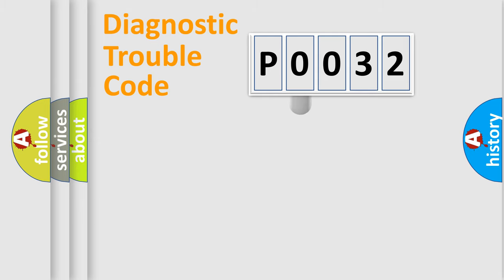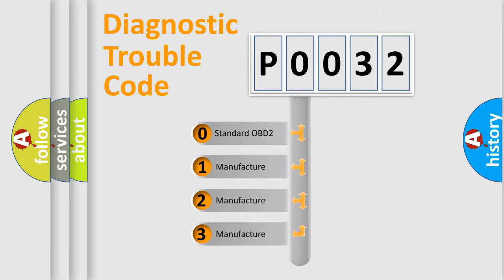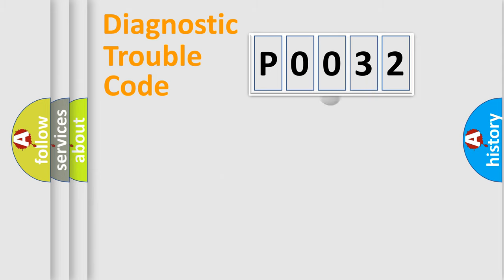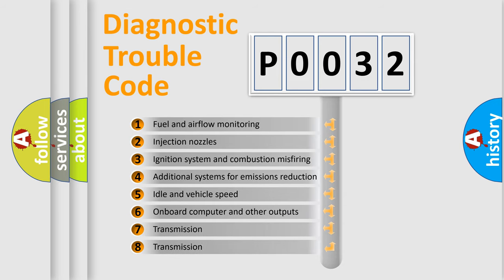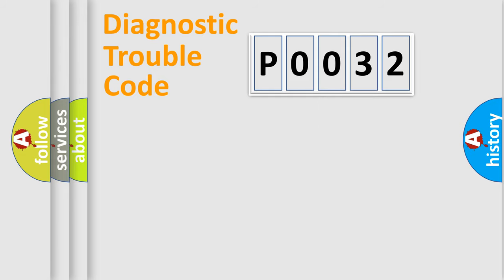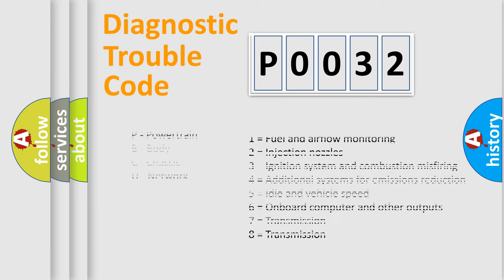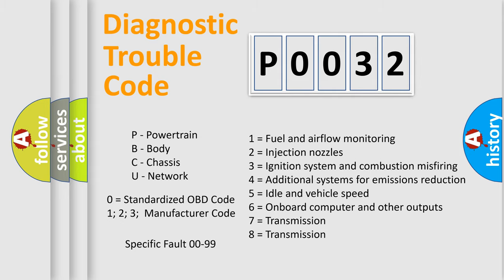This distribution is defined in the first character of the code. If the second character is expressed as zero, it is a standardized error. In the case of numbers 1, 2, or 3, it is a more car-specific error expression. The third character specifies a subset of errors. This distribution is valid only for the standardized DTC code. Only the last two characters define the specific fault of the group, and this division is valid only if the second character code is expressed by the number zero.